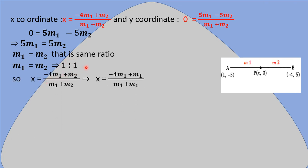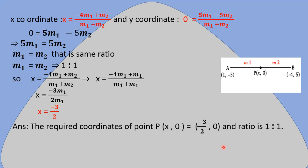Now putting the value M1 = M2 into the x-equation: x = (-4M1 + M1) / (M1 + M1) = -3M1 / 2M1. The M1 cancels out, giving x = -3/2. So the coordinate of point P is (-3/2, 0), and point P divides line segment AB in the ratio 1 : 1.